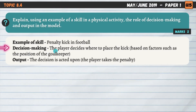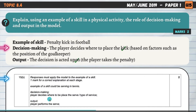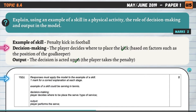In the decision making stage, the player decides where to place the kick based on factors such as the position of the goalkeeper — if they're positioned to the left, the player might decide to shoot to the right. For output, the decision is acted upon — the player takes the penalty. Output is simply the decision being executed. Similarly for a tennis serve: the player decides where to place it, then performs it. A really simple question.